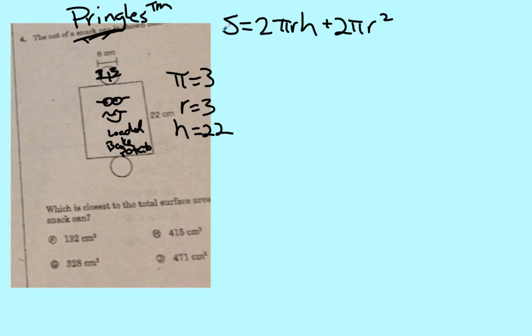So we take all of our numbers and put them into our equation. So height is 22, π is 3, also 3, and radius is 3 times 3 squared, and these 2s are just 2s.